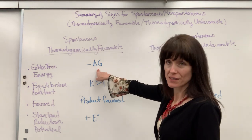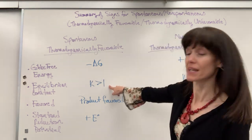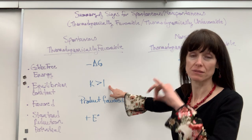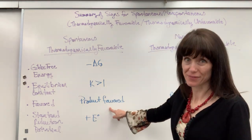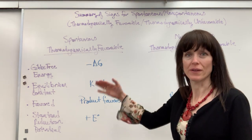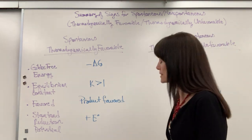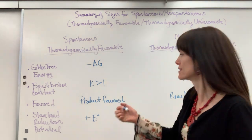So, we've got our negative delta G is spontaneous, K is greater than 1, so the ratio of products to reactants. There's more products, so we call that product favored. That's what makes it greater than 1, the numerator is greater than 1. And then standard reduction potential is going to be positive.